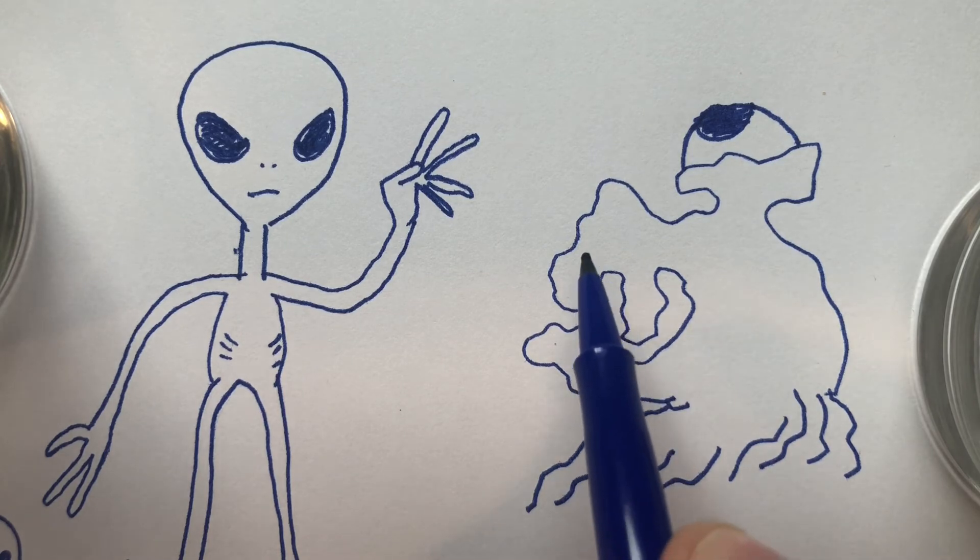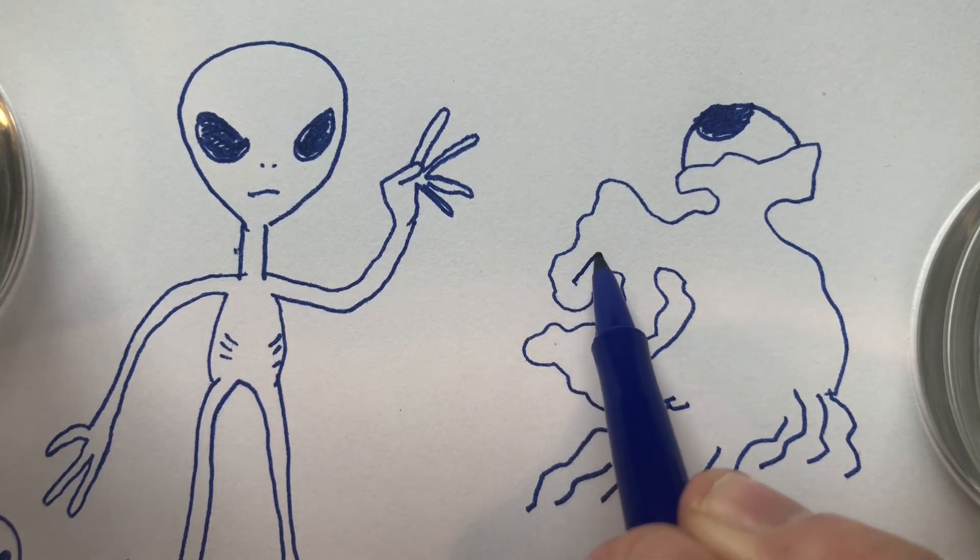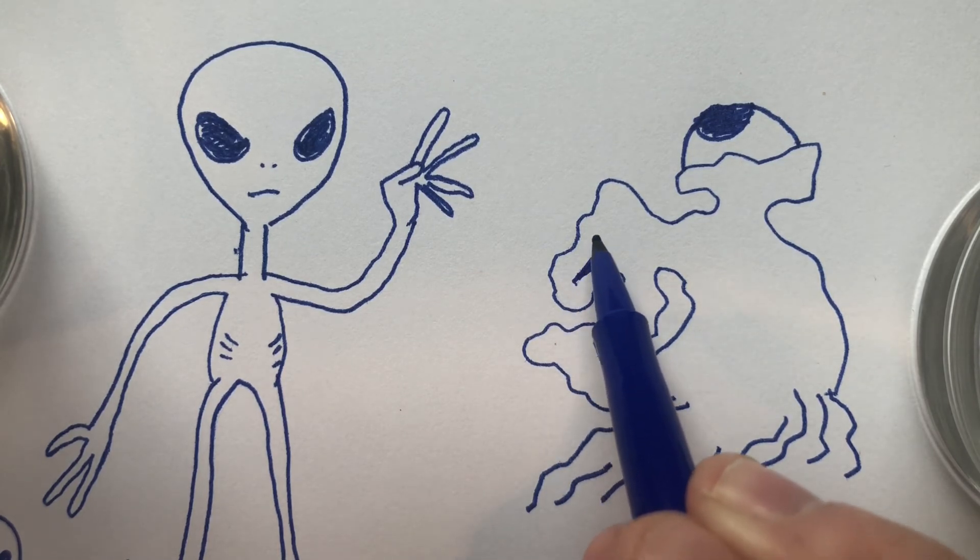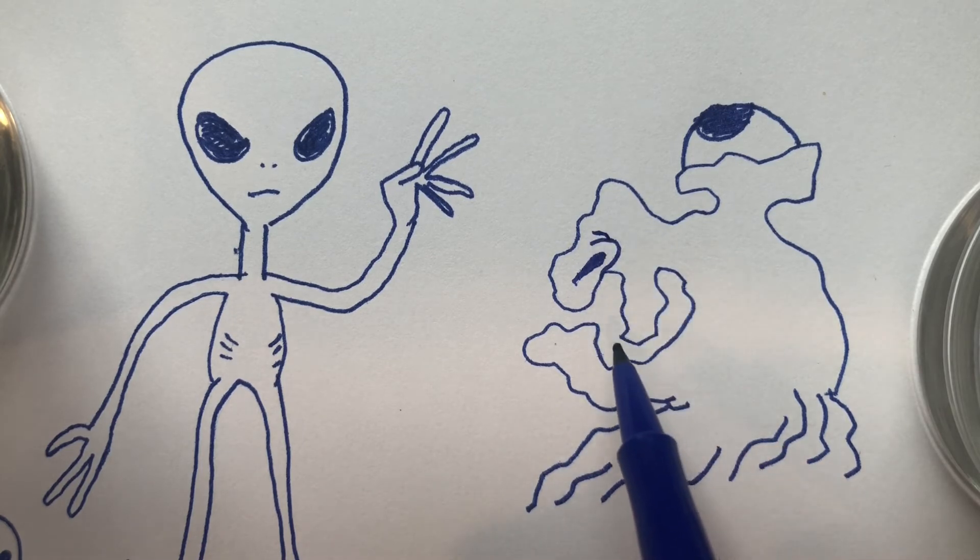So he's got like one eye, and this is going to be his nose, so I'm going to put a nostril right there. And this is his mouth.